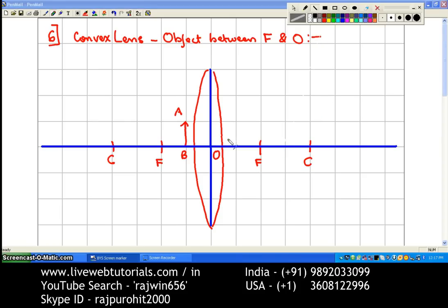The first ray that we are drawing, this ray is through point A and this ray is parallel to the principal axis.